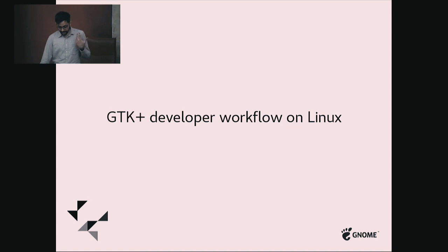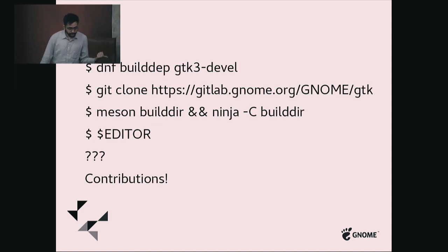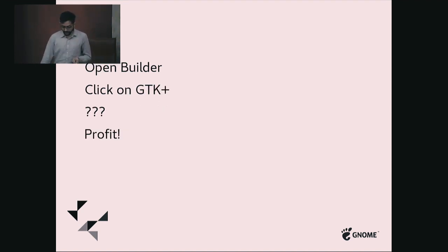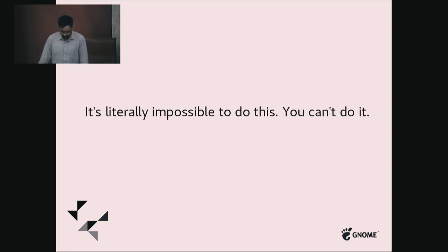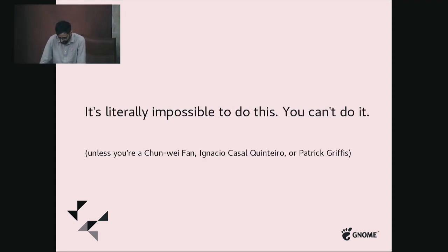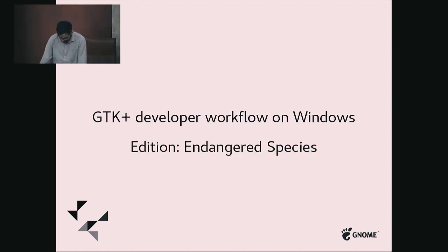What if you want to develop GTK or GNOME libraries on Windows? What do I do then? On Linux the workflow is again really simple — install build dependencies for GTK, clone it, configure it, build it, and you're done. Or if you have Builder, you can click on GTK and it'll download and set it up for you. On Windows, there is no workflow. You can't do this unless you are one of these three people who are just superheroes — and that's the only reason why this still works at all on Windows. A normal person cannot figure out how to do this. Imagine what things would be like if we had a decent workflow and people could actually do this by themselves.